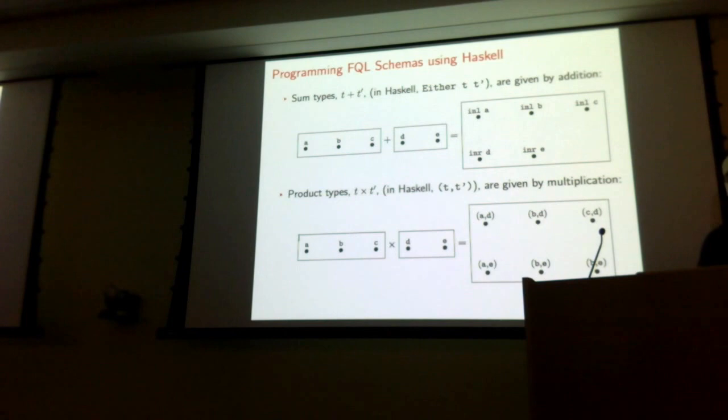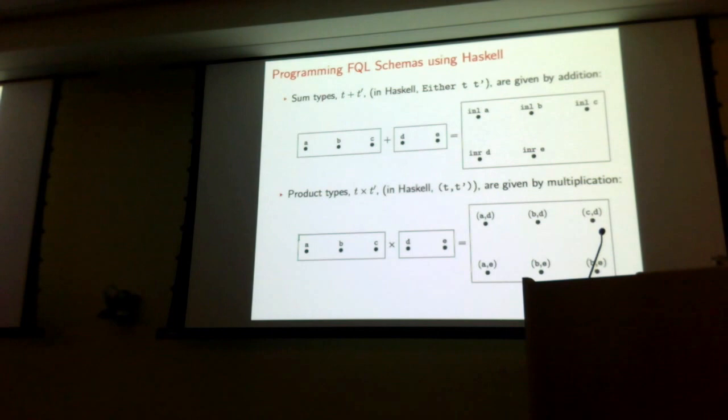Now for sum and product types. Sum types in Haskell are written as Either. To add a schema on the left to a schema on the right, I take the three nodes from the schema on the left, plug them in here marked as coming from the left, and I take the two nodes on the right, add them in, marked as coming from the right.